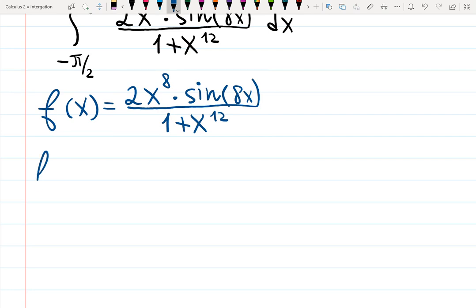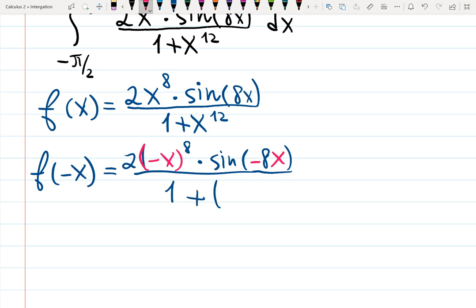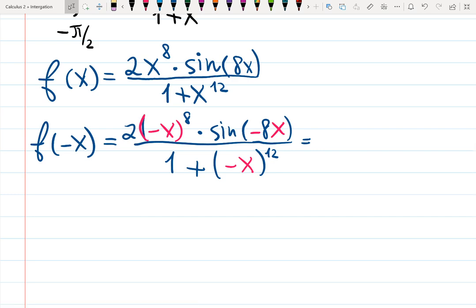To check if it's even or odd, I will substitute negative x everywhere I see x. So it will be 2 times negative x. Don't forget to keep all the exponents and signs raised to the 8, times sine of, now it's going to be negative 8x, all over 1 plus negative x raised to the 12. Now, let's see what's going to happen.